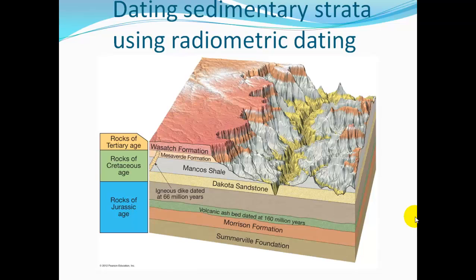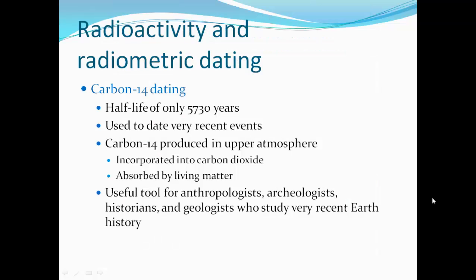As we date our sedimentary strata using radiometric dating, these rocks came out with dates of 160 million years or older — these are rocks of Jurassic age. Up here are Cretaceous rocks, and here are our Tertiary rocks. Radiometric dating gave us dates we can place into these age ranges, and this date dates at 66 million years ago, cutting across rocks that are older. Carbon-14 dating has a half-life of only 5,730 years and is used to date very recent events. Carbon-14 is produced in the upper atmosphere, incorporated into carbon dioxide, and is absorbed by living matter. It's very useful for anthropologists, archaeologists, historians, and geologists who study very recent Earth history.